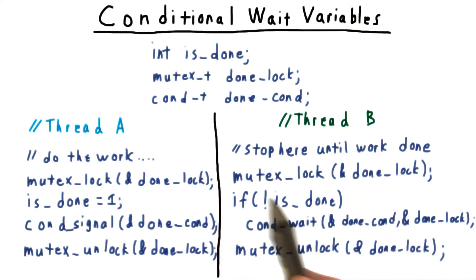Thread B for his part will first acquire the lock, and then check to see if the work is done. If it isn't, he will wait.